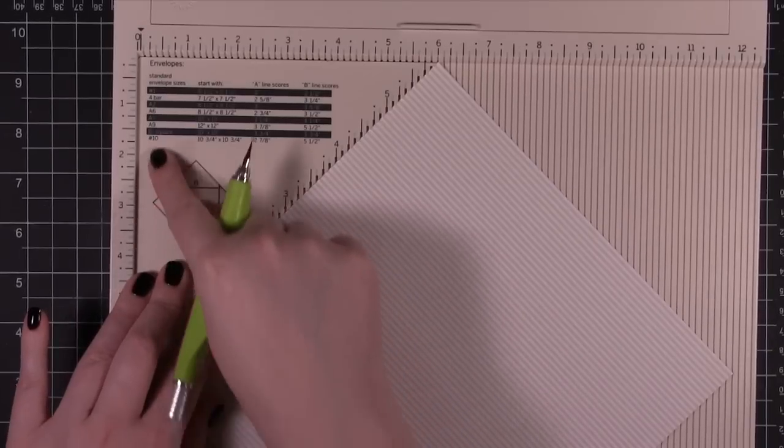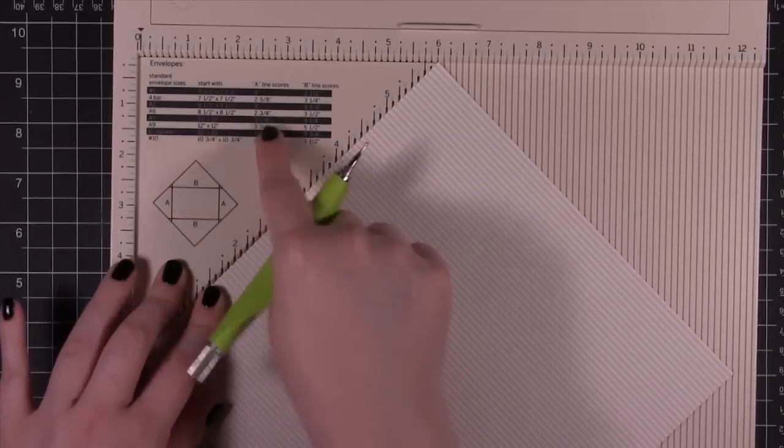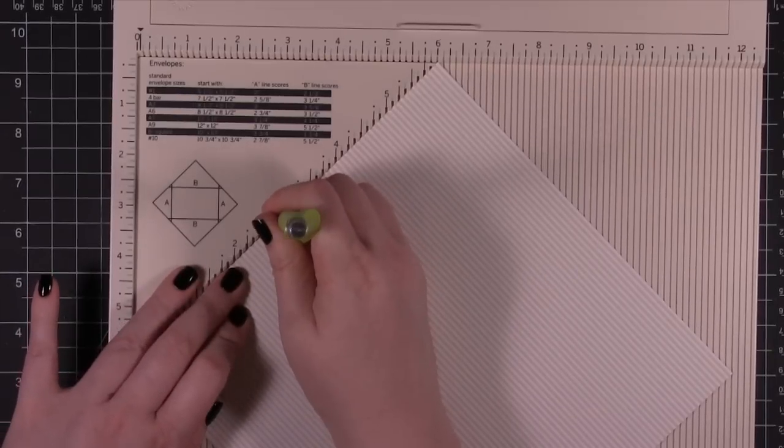I'm going to start with the A lines. So I'm coming up here. A lines is at 3 inches. So I'm going to score at 3.